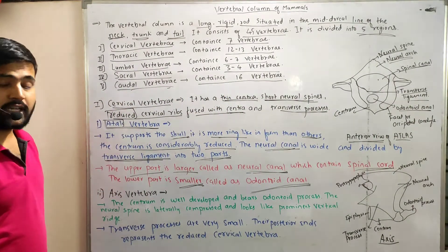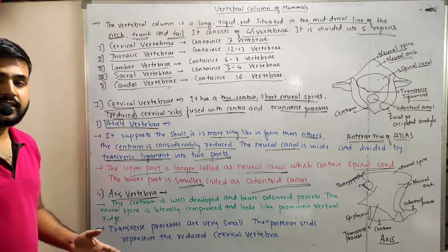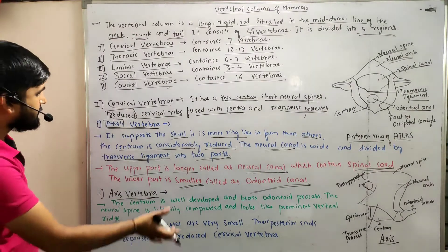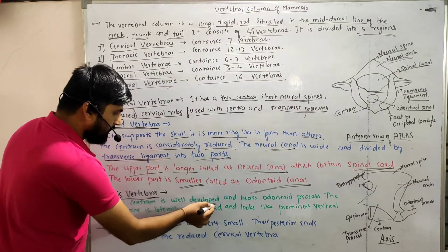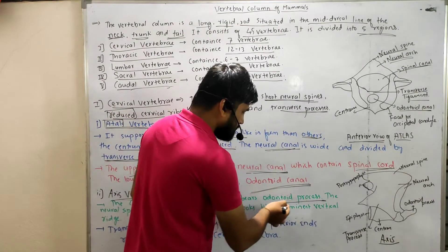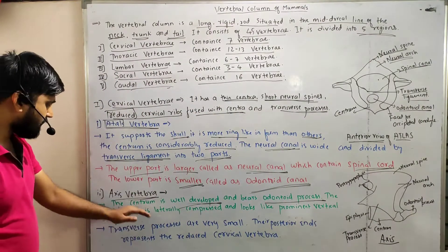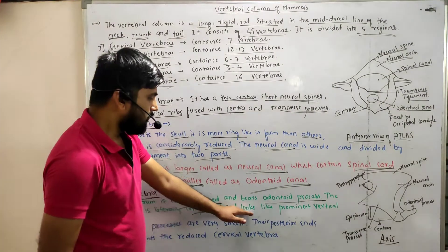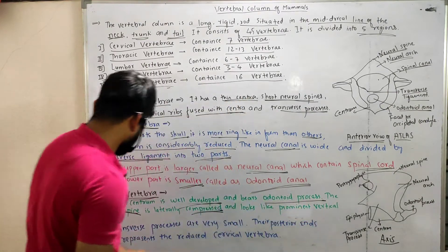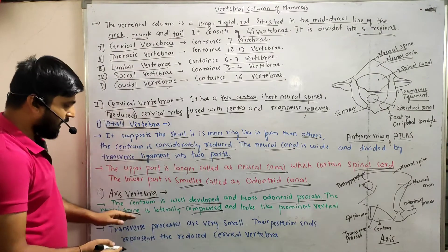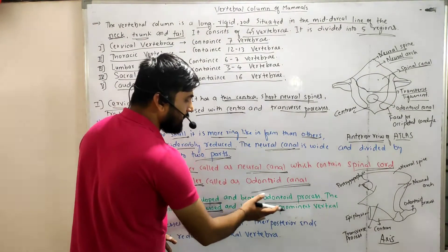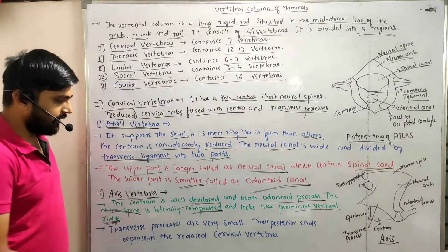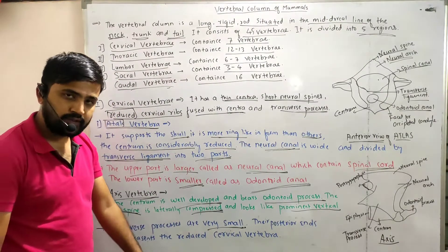The second cervical vertebra is the axis vertebra. In the axis vertebra, the centrum is well developed and bears an odontoid process. The neural spine is laterally compressed and looks like a prominent vertical ridge. The transverse processes are very small.